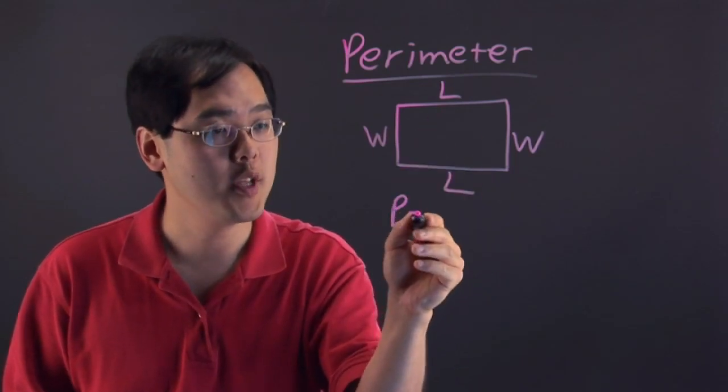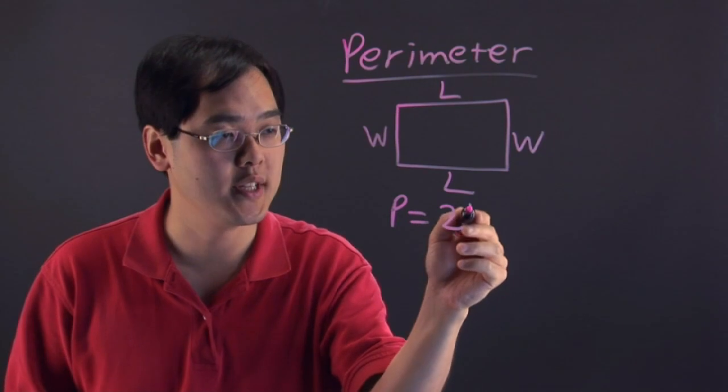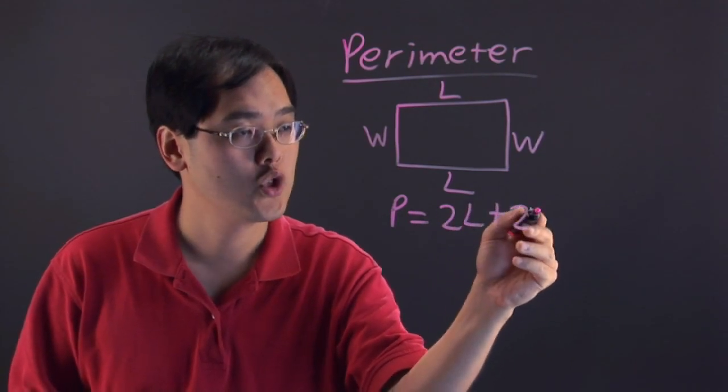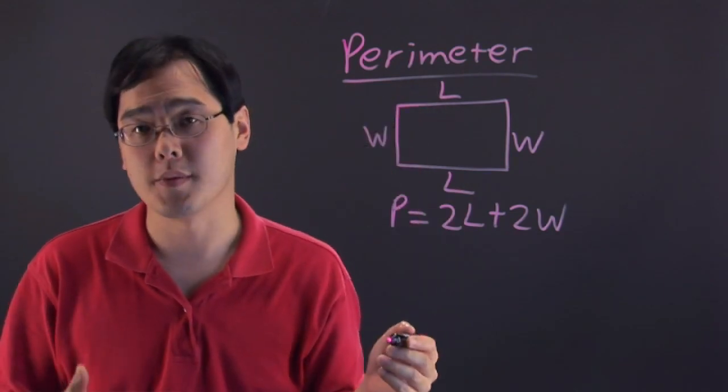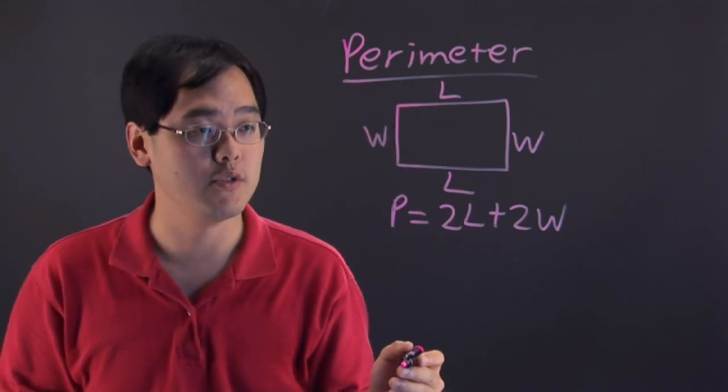So in this case, as you can imagine, the perimeter is going to be twice the length plus twice the width. Now, that applies again to all shapes when it comes to perimeter, the distance around the two-dimensional shape.